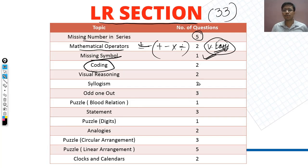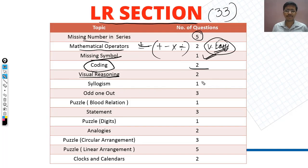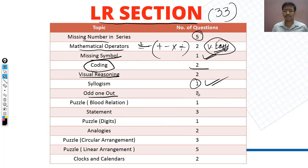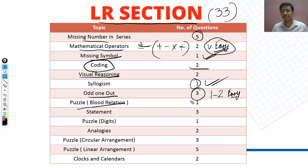Coding had 2 questions: one simple coding and one phrase coding, where a coded language was given and you had to identify the correct option. These 2 questions were easy. Odd one out had 3 questions — 1-2 were easy and 1 was difficult, based on student feedback.